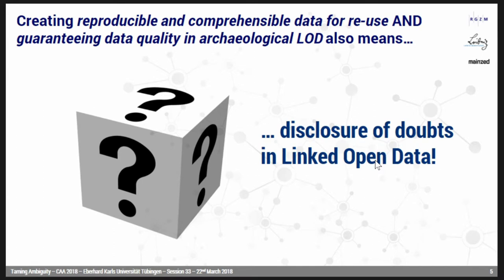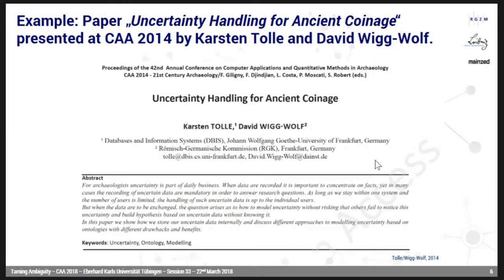If we try to create reproducible data for reuse and guarantee data quality in archaeological linked open data, it means we have to disclose all the doubts also when building linked open data. This is not really a new idea. Our session chairs presented a paper at CIA 2014 with the title 'Uncertainty Handling for Einstein Coinage,' and this was some kind of first idea for our paper. So it's nothing really new, but with some new ideas and new methods.